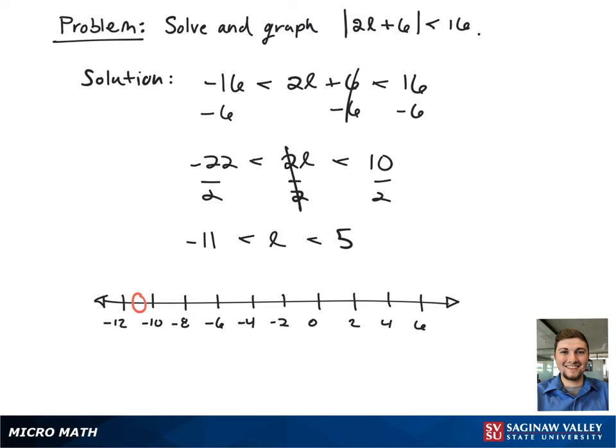Looking at it on a number line, we go from negative 11 with an open circle to 5 with an open circle. In interval notation, this looks like an open-ended bracket from negative 11 to 5.